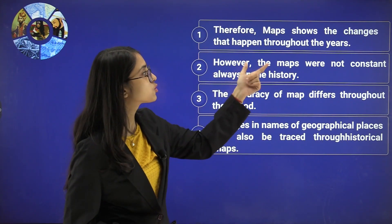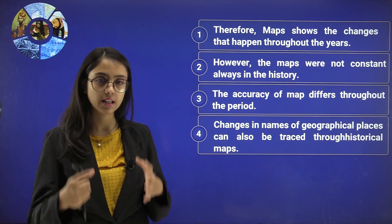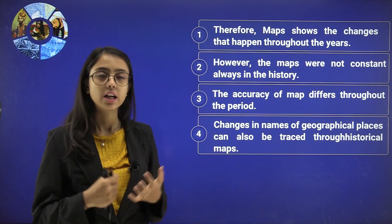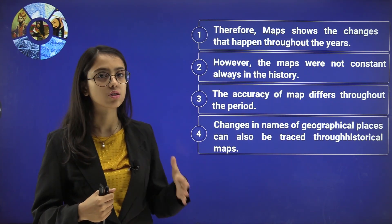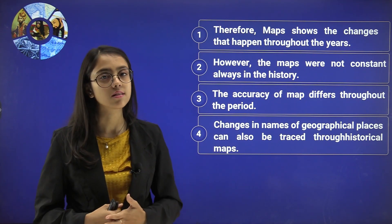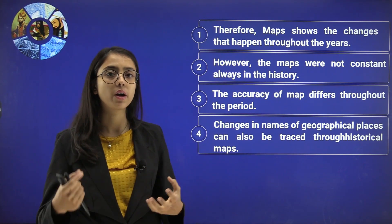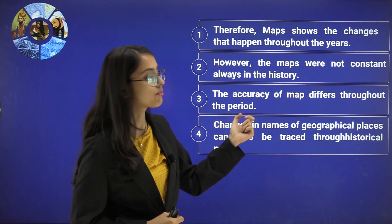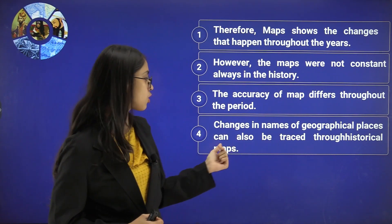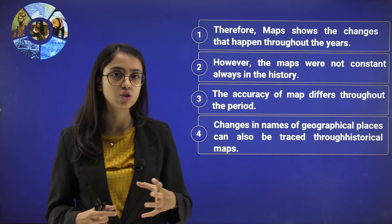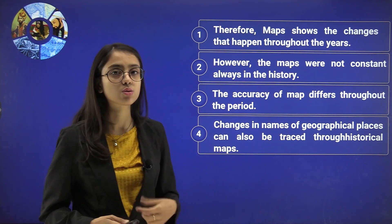Maps show the changes that happened throughout the years. The Indian subcontinent was not like it used to be — the territory was not what it was over 1,000 or 2,000 years ago. A lot of periodic changes took place and that is how we got our subcontinent. However, maps were not always constant in history; they were changing and interpreted by many geographers and cartographers. The accuracy of maps differs throughout periods, and changes in the names of geographical places can also be traced through historical maps.